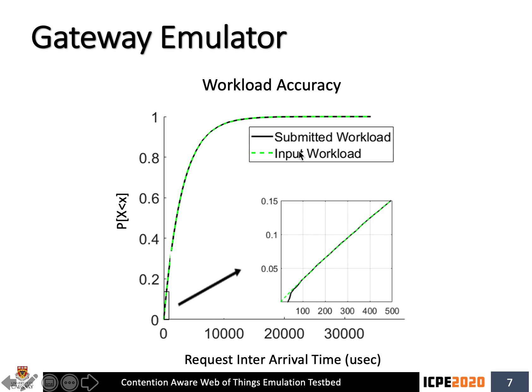In one example, we created the cumulative distribution function of inter-arrival times from the submitted workload and compared it with the expected workload. In the zoomed area, the first 10th percentile showed no inter-arrival times below about 30–40 microseconds, but this affected only one percentile of requests and did not impact the overall distribution. However, if inter-arrival times are all small and the mean is close to capacity, it may indicate the gateway emulator lacked capacity to submit that workload, and the user should add more gateway emulator instances.